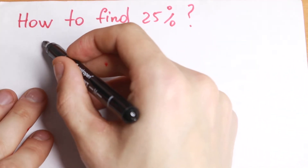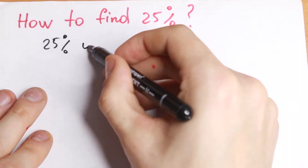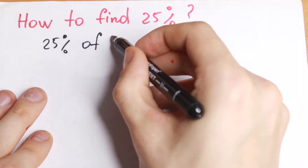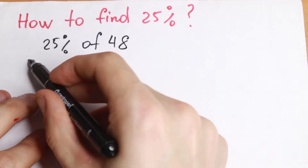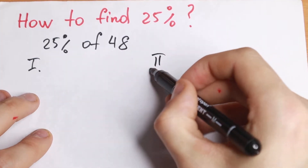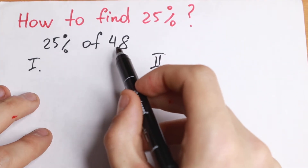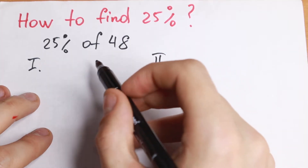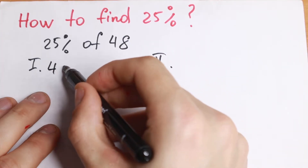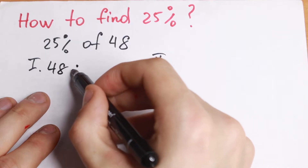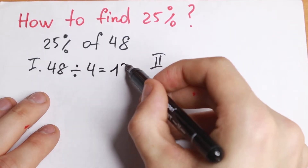For example, we need to find 25% of 48. First of all, if you want to find 25% of any number, you need to divide by 4. So 48 divided by 4, we will have 12.